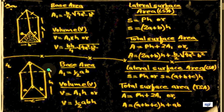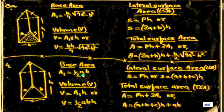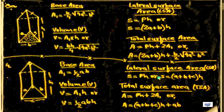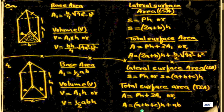For a right angle triangle base prism: base area A1 = half into a into b. Volume V = A1 into H, or V = half into H times a times b. Lateral surface area LSA: S = (a plus b plus c) into h. Total surface area TSA: A = P into H plus 2A1, or A = (a plus b plus c) times H plus ab. These are all the formulas for finding base area, volume, lateral surface area, and total surface area.